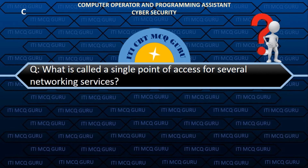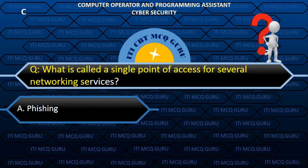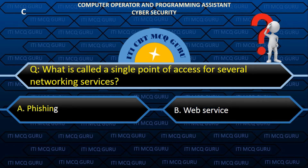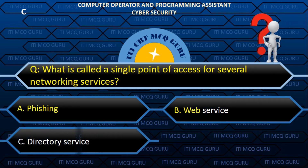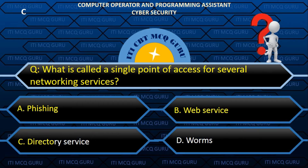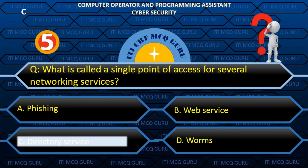What is called a single point of access for several networking services? Answer: C. Directory Services.